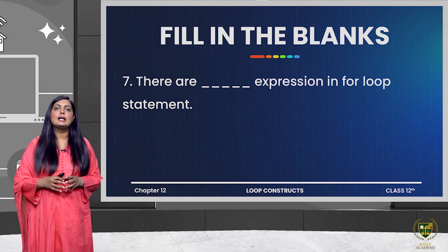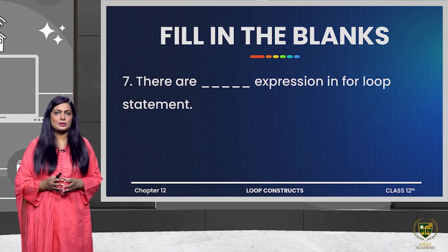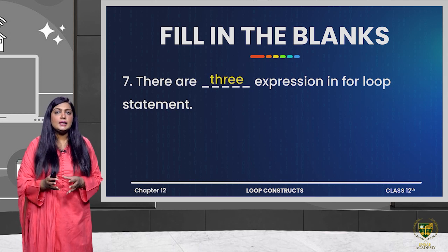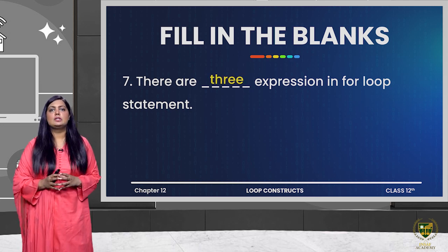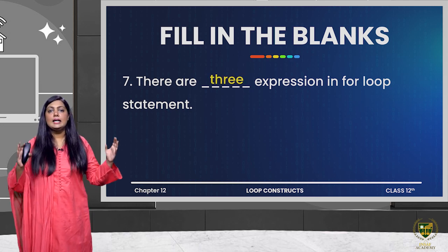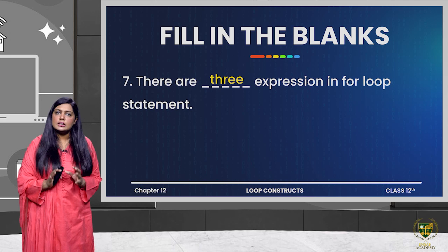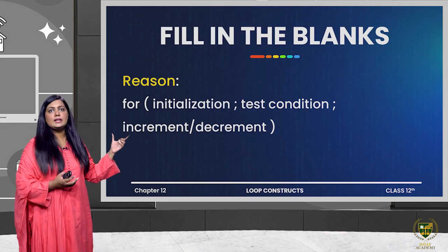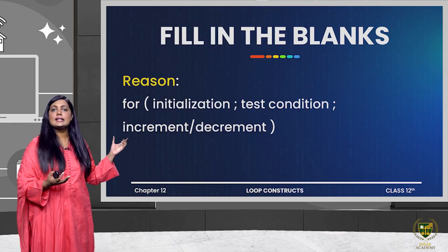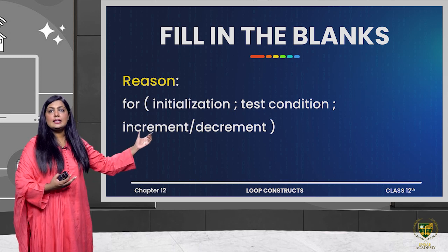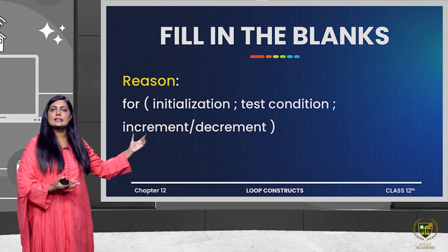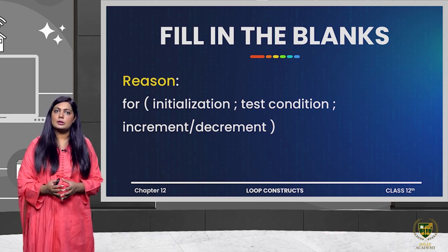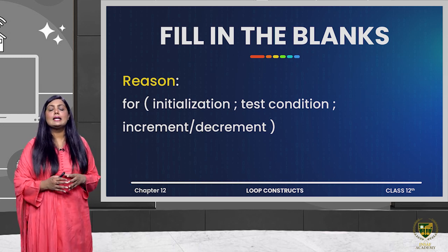There are dash expressions in a for loop statement. When we talk about the for loop statement, how many expressions are present inside it? Inside the for loop there are three expressions present inside the brackets where the condition is written: the first is the initialization expression, the second is the test condition, and the third is the increment or decrement.